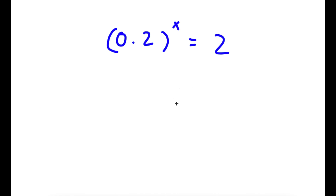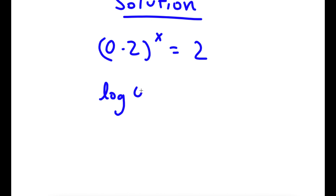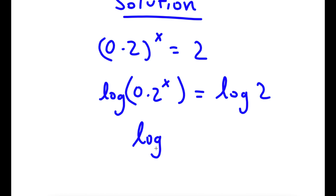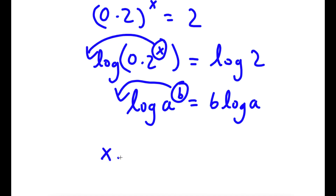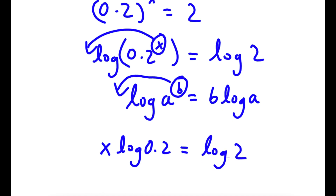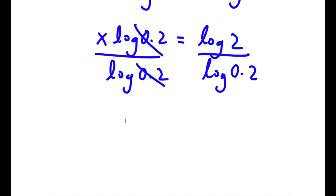In this problem I have 0.2 to the power of x is equal to 2, and I want to find the value of x. I'm going to take the log on both sides, so I have log 0.2 to the power of x is equal to log 2. Since I can move the exponent to the front, I get x times log 0.2 is equal to log 2. Now if I divide both sides by log 0.2, I get x is equal to log 2 over log 0.2.